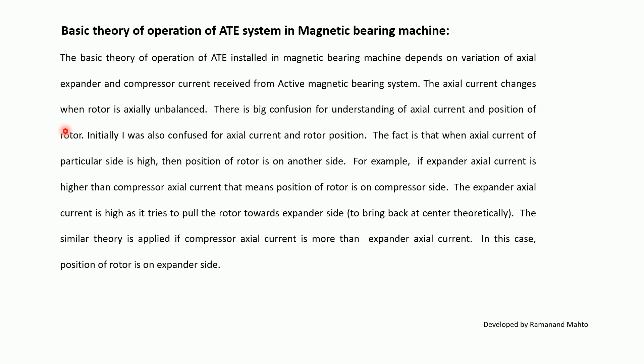Initially, this concept of axial current and rotor position can be confusing. The key fact is that when the axial current of a particular side is high, the position of the rotor is on the other side. For example, if expander axial current is higher than compressor axial current, it means the expander axial current is high as it tries to pull the rotor towards the expander side to bring it back to center. A similar theory applies if compressor axial current is more than expander axial current.